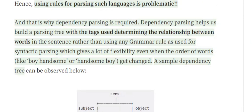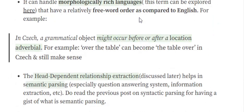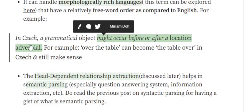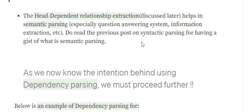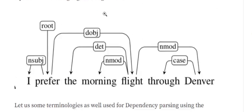Dependency parsing trees handle morphologically rich languages where word order is free, with continuous adverbs and determiners used freely. For example, in Czech a grammatical object might occur before or after a locational adverb — 'over the table' can become 'the table over' and still be correct. The head-dependent relationship extraction also helps in semantic parsing, bridging hard-coded grammatical tags with the meaning of the sentence.